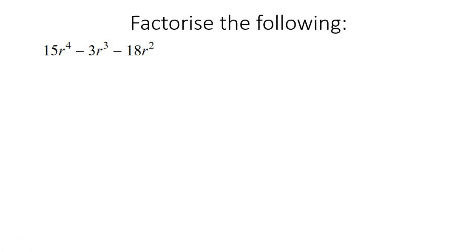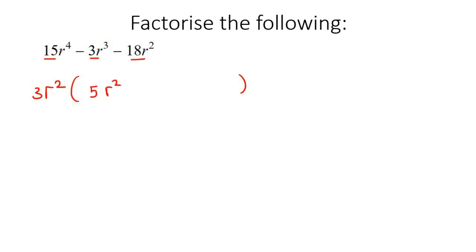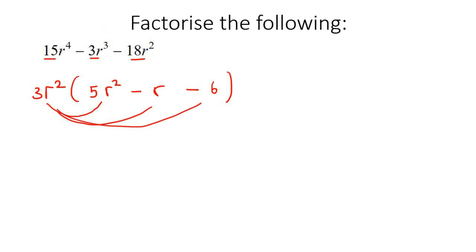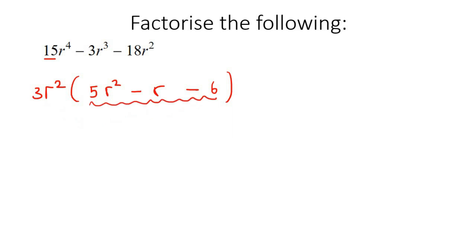Next example. So for this one, you have an R⁴, an R³, and an R². So you could take out the lowest one, which is R². The number 3 would go into all of these, so I'm going to take out a 3 as well. That would leave you with 5R² minus R minus 6. The way that I know it's correct is if I had to multiply back: that would be 15R⁴, negative 3R³, and negative 18R squared. So everything looks good. I quickly do another check to make sure there's no other common factors, and it looks okay.